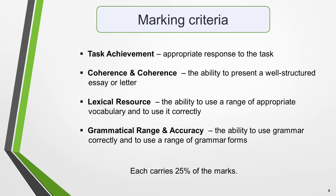As with all other parts of the IELTS exam, General Writing Task 1 is marked according to four criteria. These are: task achievement — an appropriate response to the task; coherence and cohesion — the ability to present a well-structured letter; lexical resource — the ability to use a range of appropriate vocabulary and to use it correctly; and grammatical range and accuracy — the ability to use grammar correctly and to use a range of grammar forms. Each carries 25% of the marks.